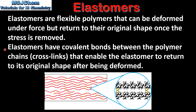Elastomers have covalent bonds between the polymer chains that enable the elastomer to return to its original shape after being deformed. In this diagram we can see the covalent bonds, which are known as cross-links, between the polymer chains.